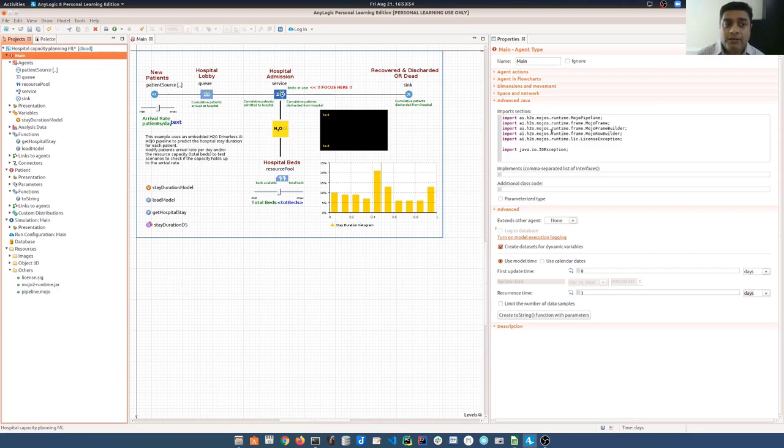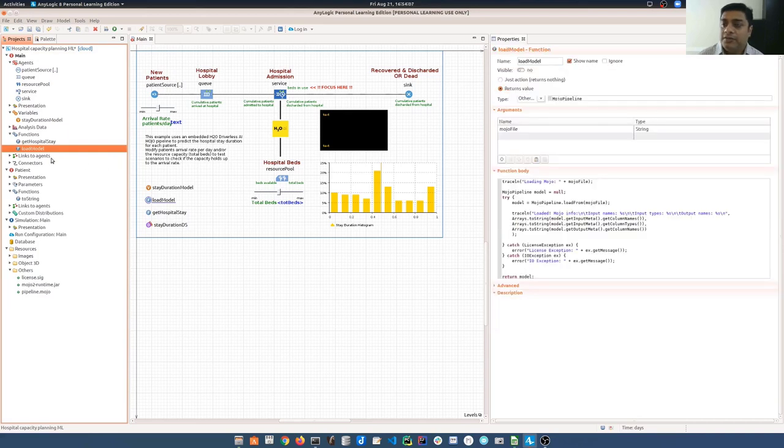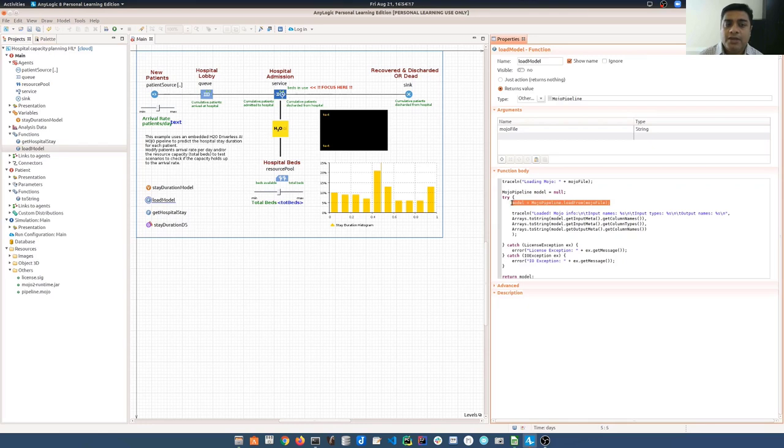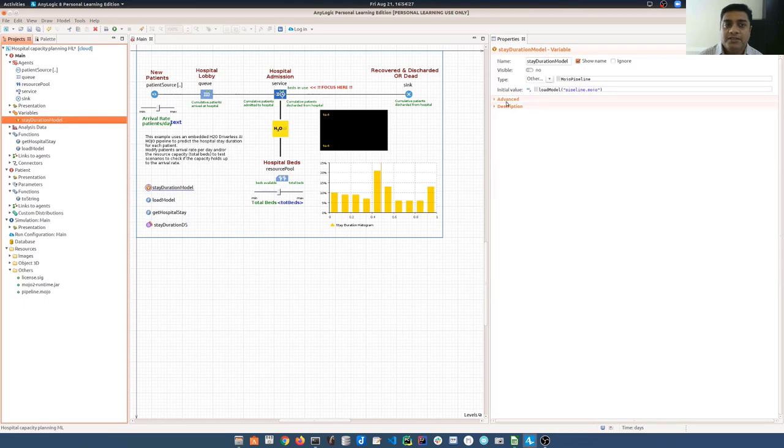With the Mojo runtime classes being available in the AnyLogic simulator, we can then now go ahead and use these classes to instantiate or load the model from the pipeline.mojo file. For that, we first created a function called loadModel that accepts an argument called MojoFile. This argument is then basically read out here to create an object of the type model. We are loading this file from here. This function gets called when this variable is instantiated out here.